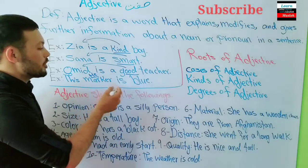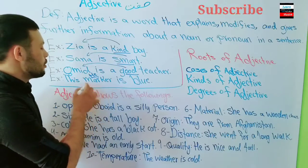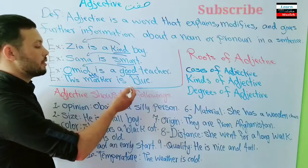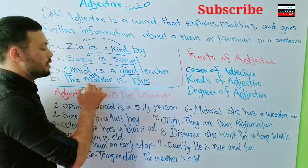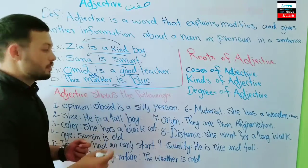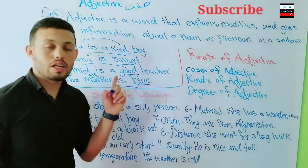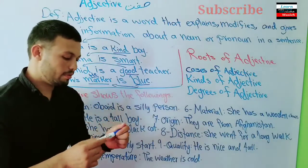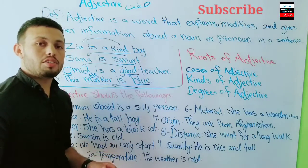For example: 'This marker is blue.' Here 'blue' is the adjective describing the marker — it tells us the color. Another example: 'They are intelligent.' Here 'intelligent' is the adjective.